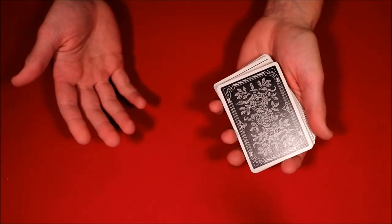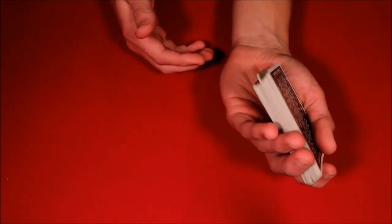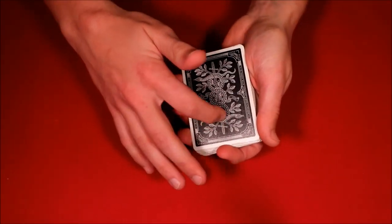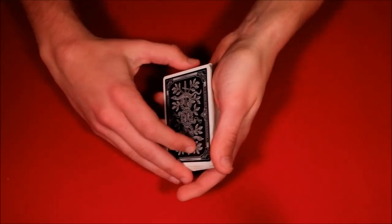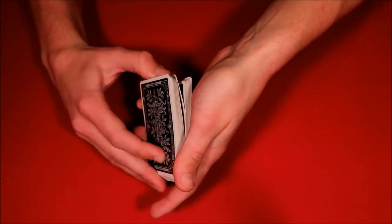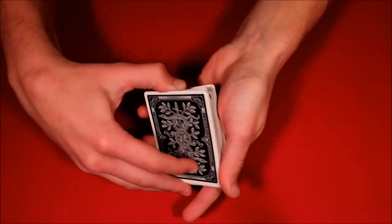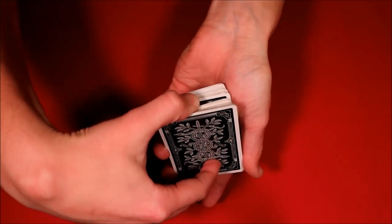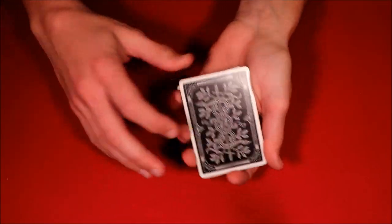But the moment you square this back up, you're still going to have that outjog. All you have to do is apply pressure downward with your finger towards the deck, pulling up on that bottom card there, and then catching a break underneath that card with the pinky break.